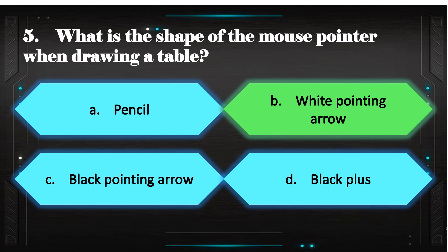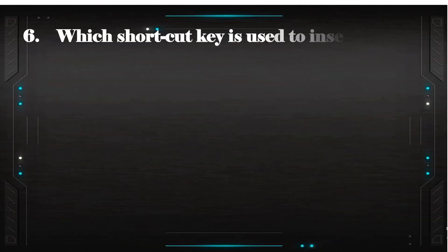Answer: B White pointing arrow. Which shortcut key is used to insert row or column?